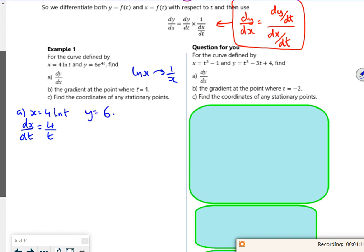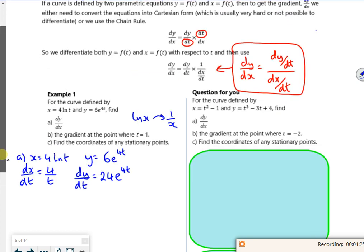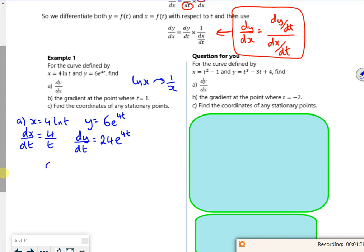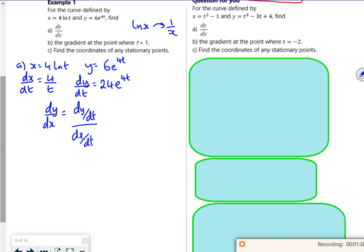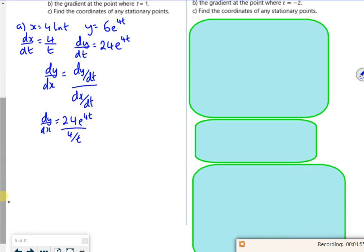So y is 6 e to the 4t. So dy, y on the left, t on the right, bring the 4 down, it's going to be 24 e to the 4t. And then I'm just going to use what I've got in the box there, which is dy by dx is dy by dt divided by dx by dt. So dy by dx is 24 e to the 4t divided by 4 over t. So 24 over 4 cancels down as a 6. Divide by 1 over t flips it and times it. So dy by dx is 6t e to the 4t.